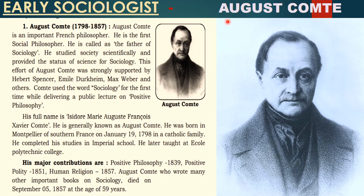The reason behind this is that he had written a book called Positive Philosophy in 1839, and after that, while delivering a speech or lecture, he used the word 'sociology' for the very first time. He was the one who used this word sociology for the first time, and that is why he is called the father of sociology. His full name is Isidore Marie Auguste Francois Xavier Comte — such a big name! So we cannot call him by this big name each time; that is why he is generally known as Auguste Comte.